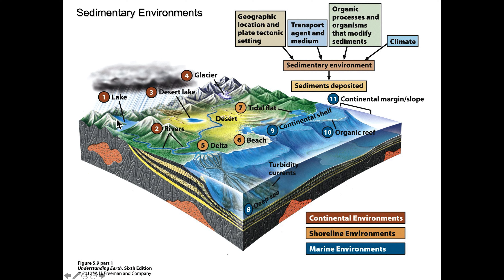Starting with number one: lakes. In this case, we're looking at an intermontane lake — we looked at an example from Premier Lake in British Columbia recently. The things to be concerned with here are the types of material entering the lake, whether siliciclastic grains or dissolved ions. Number two, rivers are going to be a transport mechanism, moving suspended and bottom sediment to a more quiet location.